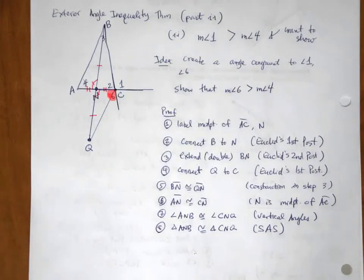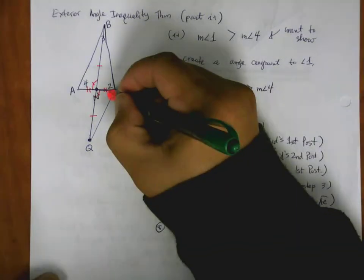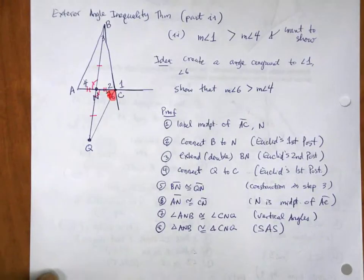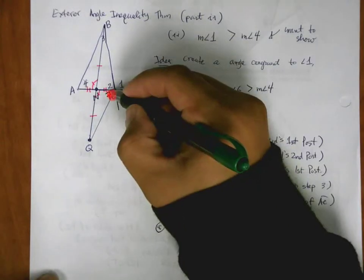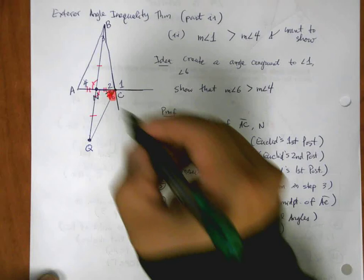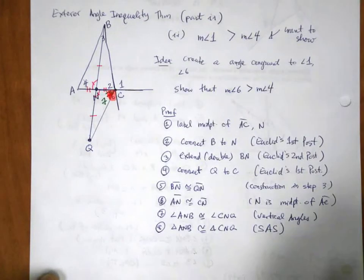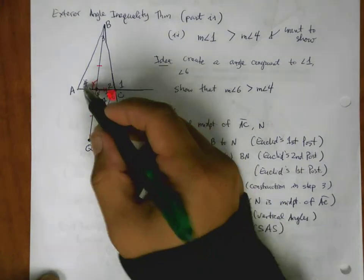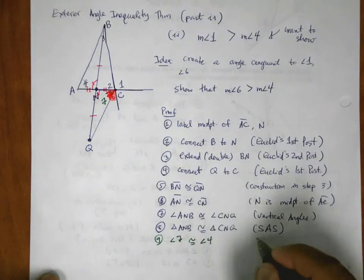Well, similar to what we had going on before, this little angle in here, we'll call this angle 7. Hopefully you can see that. This is angle 7. So we can say that angle 7 corresponds to angle 4, so it must be congruent to angle 4, by CPCTC.